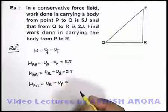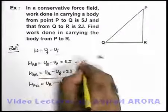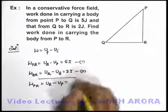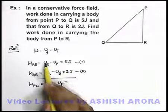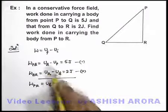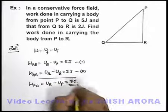If we wish to calculate it, just have a look. If we add the above two equations, equation 1 and equation 2, you just see what we are getting. This U_Q gets cancelled out, and we'll be getting U_R minus U_P that will be equal to 7 joules.